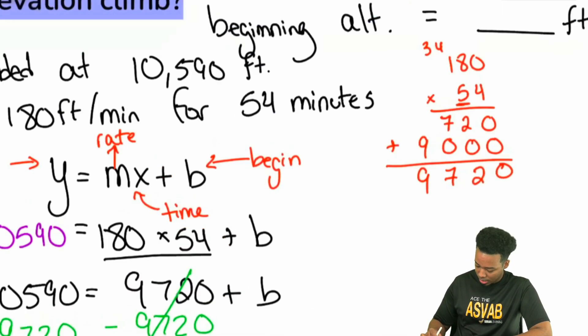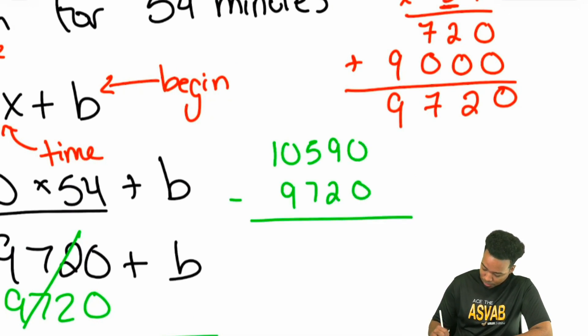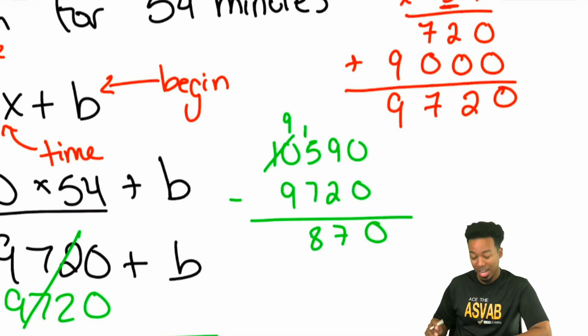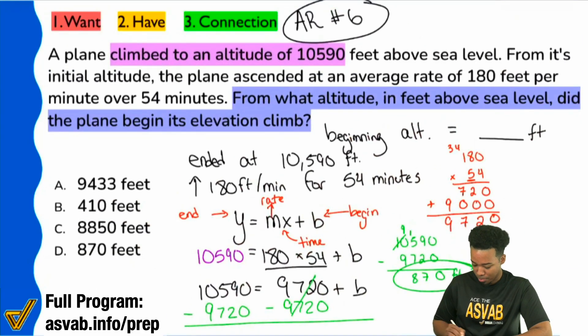That's it. So let's go ahead and figure out what that is. Let's just zoom in over here. So 10,590 minus 9,720. That's going to give us 0, 7. That's going to turn into a 9. That'll be 15. So that'll be 8. So 870 is what we have as the beginning altitude. So 870 feet in the air. That is our B, and that will be answer choice D.